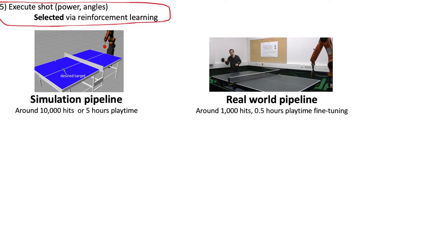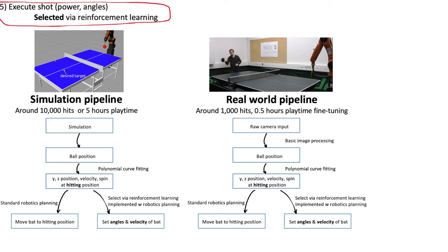Perhaps the most interesting aspect of the paper is that this all works in the real world. They do actually perform most of the training in a simulator and just do some fine tuning in the real world. But they make a big effort to get this simulator to closely match what happens in the real world. For example, they set the friction coefficients of the ball and the bat to match those that they are actually using.